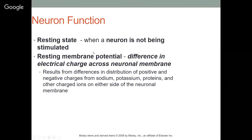The resting state is when a neuron is not being stimulated. The resting membrane potential is a difference in electrical charge across the neuronal membrane — the result of differences in distribution of positive and negative charges from sodium, potassium, proteins, and other charged ions on either side of the membrane. The cell has a resting membrane potential and just needs the proper stimulus to fire.